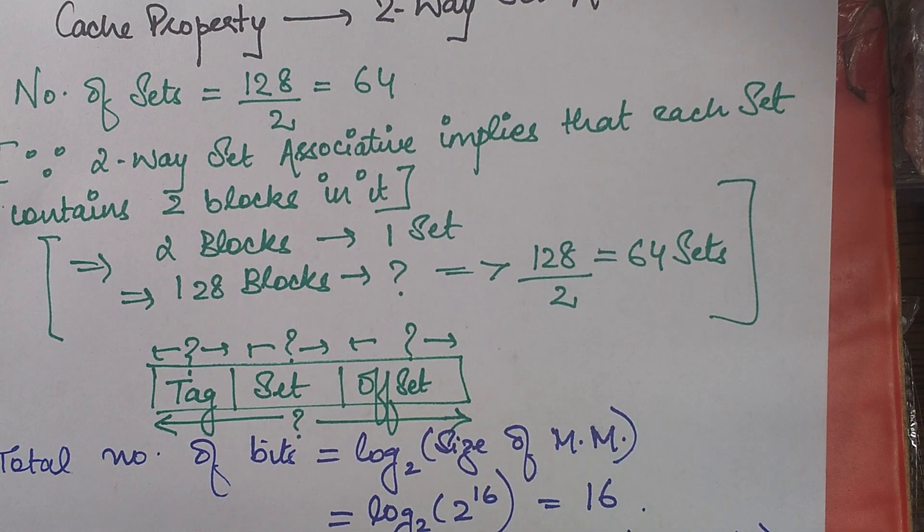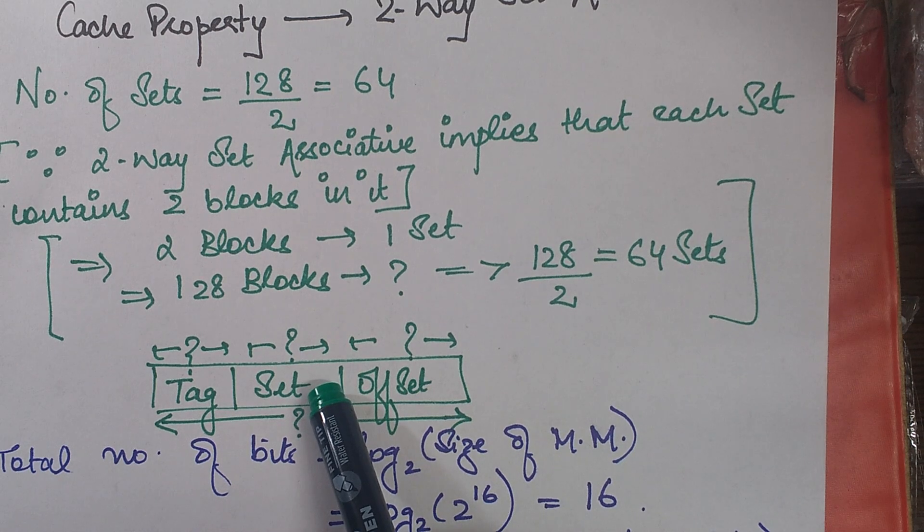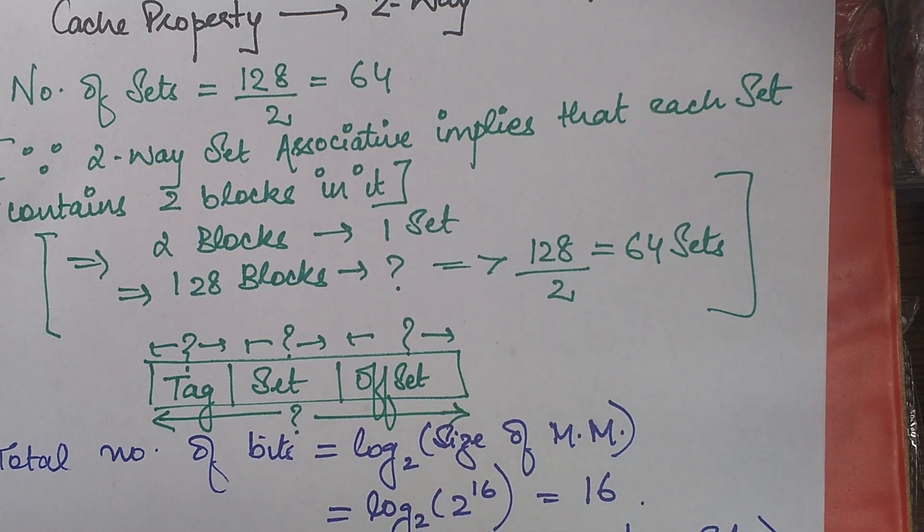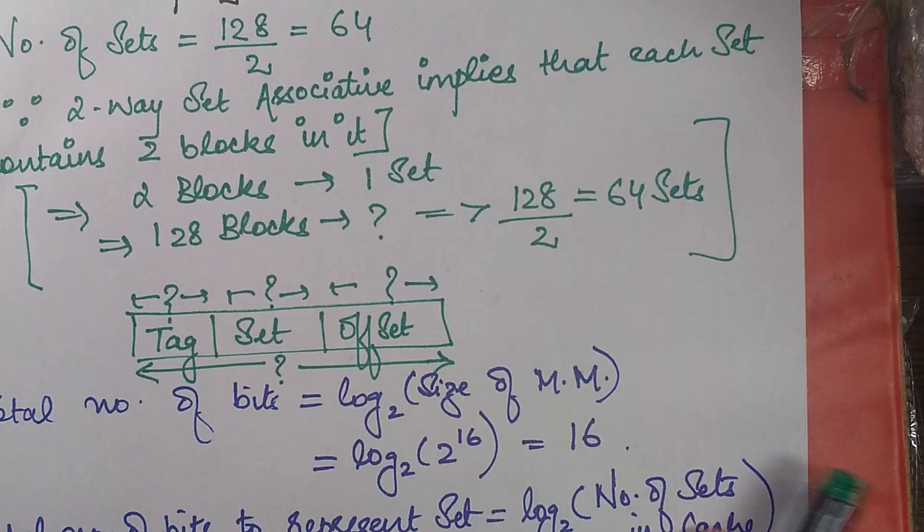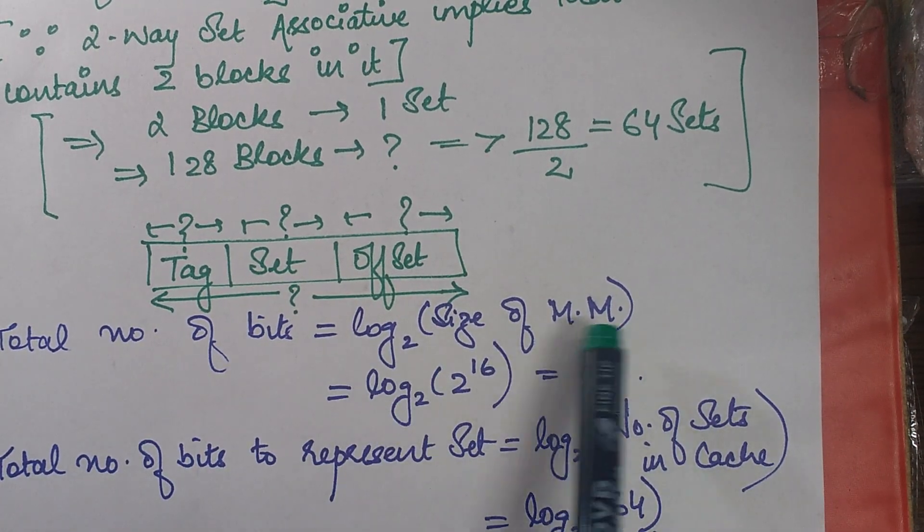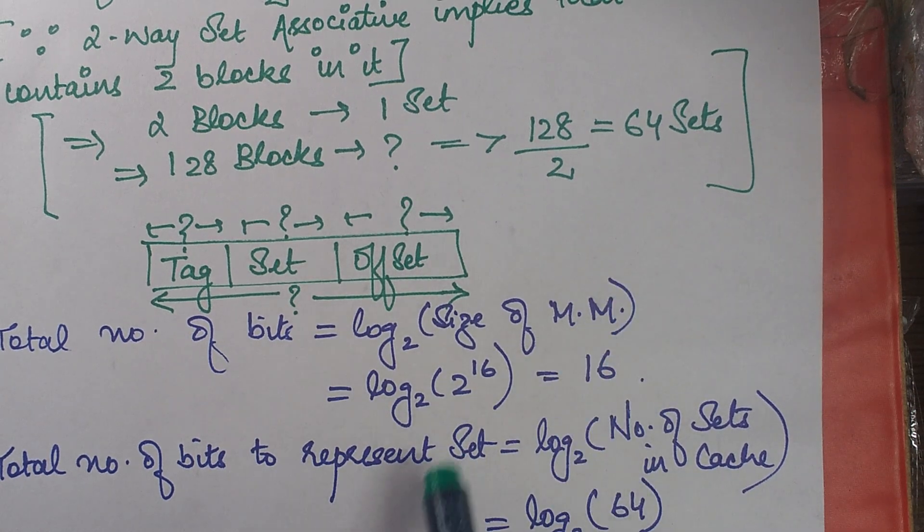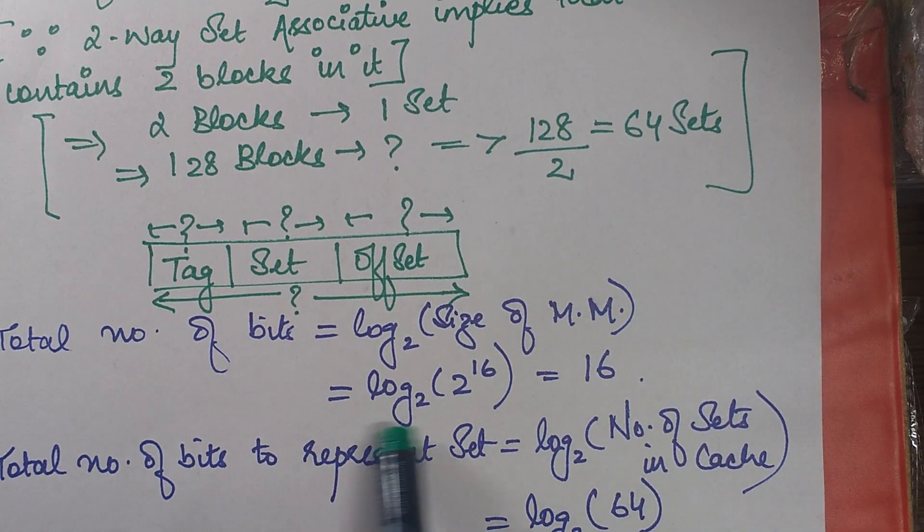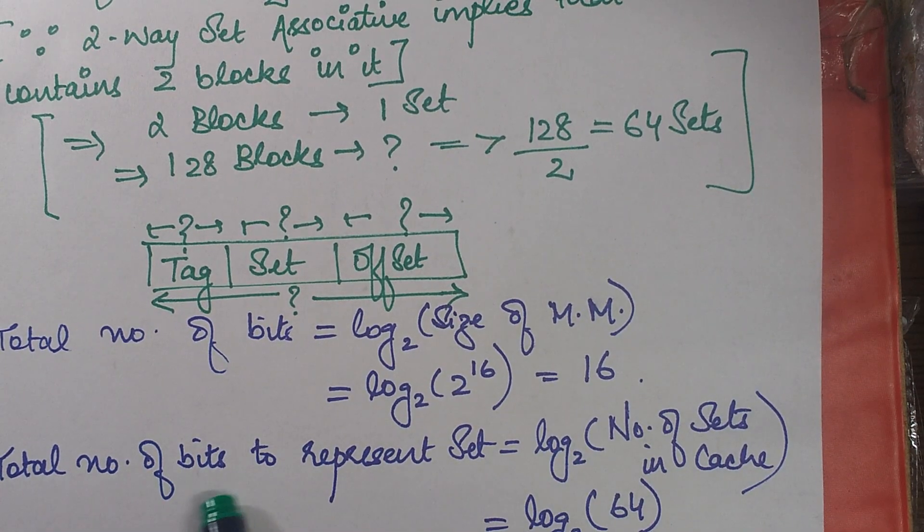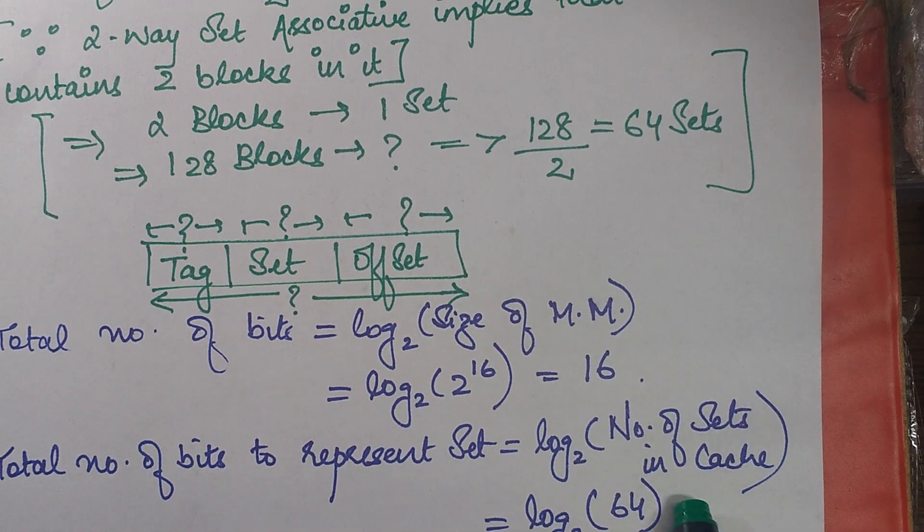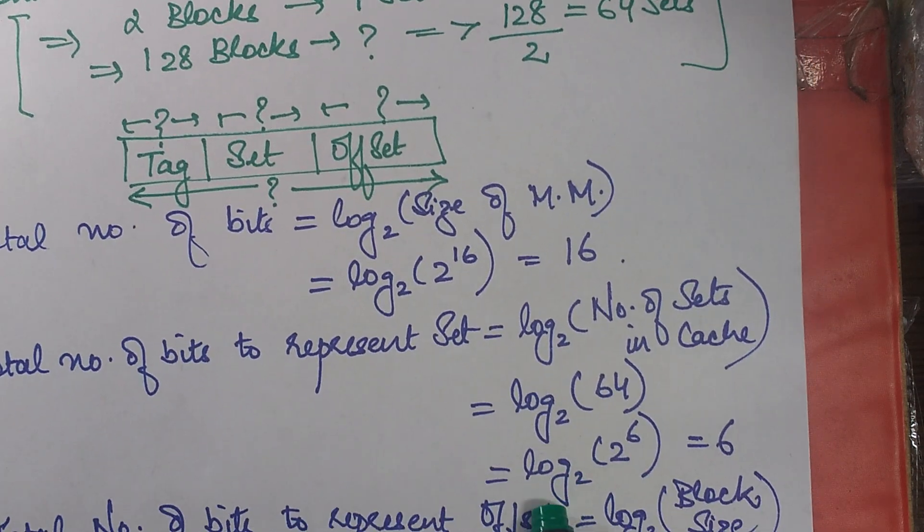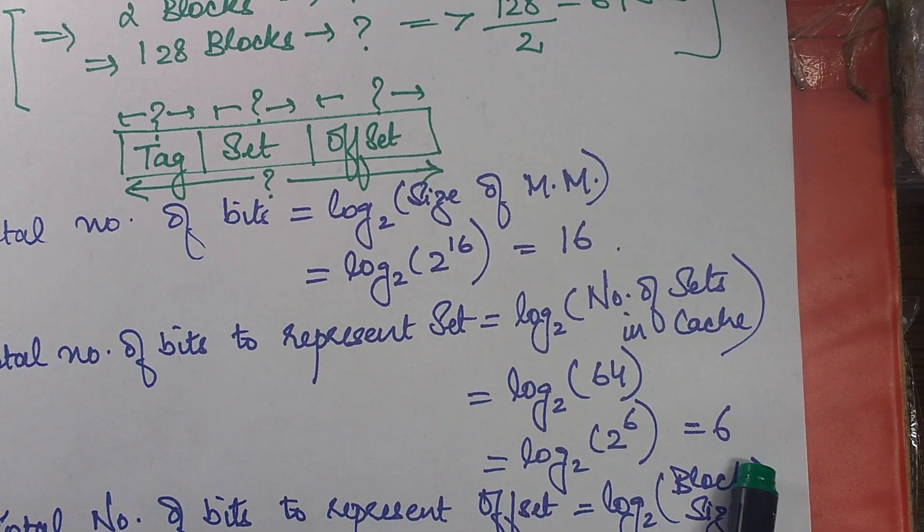The number of set bits actually represent the number of bits required to represent these many combinations of sets. So we also need to find the total number of bits. So the total number of bits is equals to log 2 of size of main memory, which was 2 to the power 16. So I just substitute it over here and what I get is 16 by using the log property. Then the total number of bits to represent set is log 2 of number of sets in cache, which is log 2 of 64, which is log 2 of 2 to the power 6, which comes out to be 6.